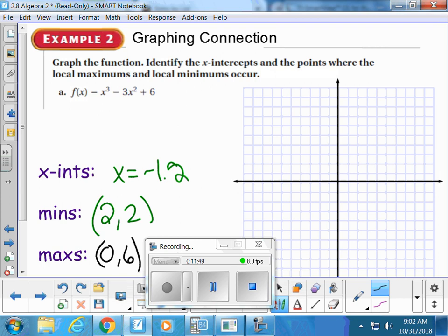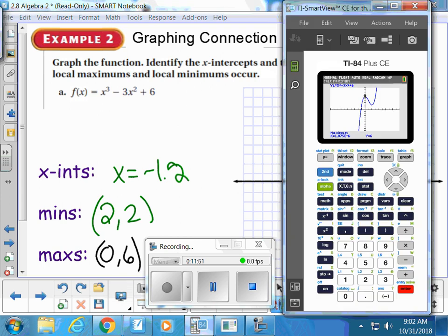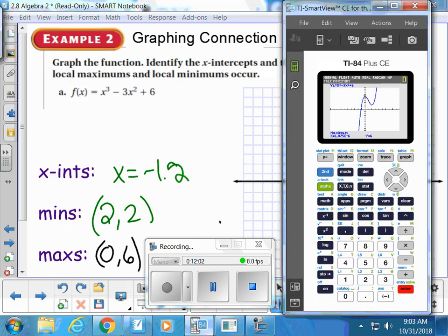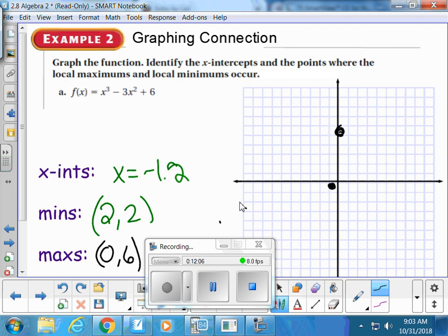I'll sketch it since I'll save these notes. My sketch kind of comes through at negative 1.2, has a turning point up there at 6, and then that local minimum at 2, 2. These points help you with making your sketch. My sketch is never perfect.